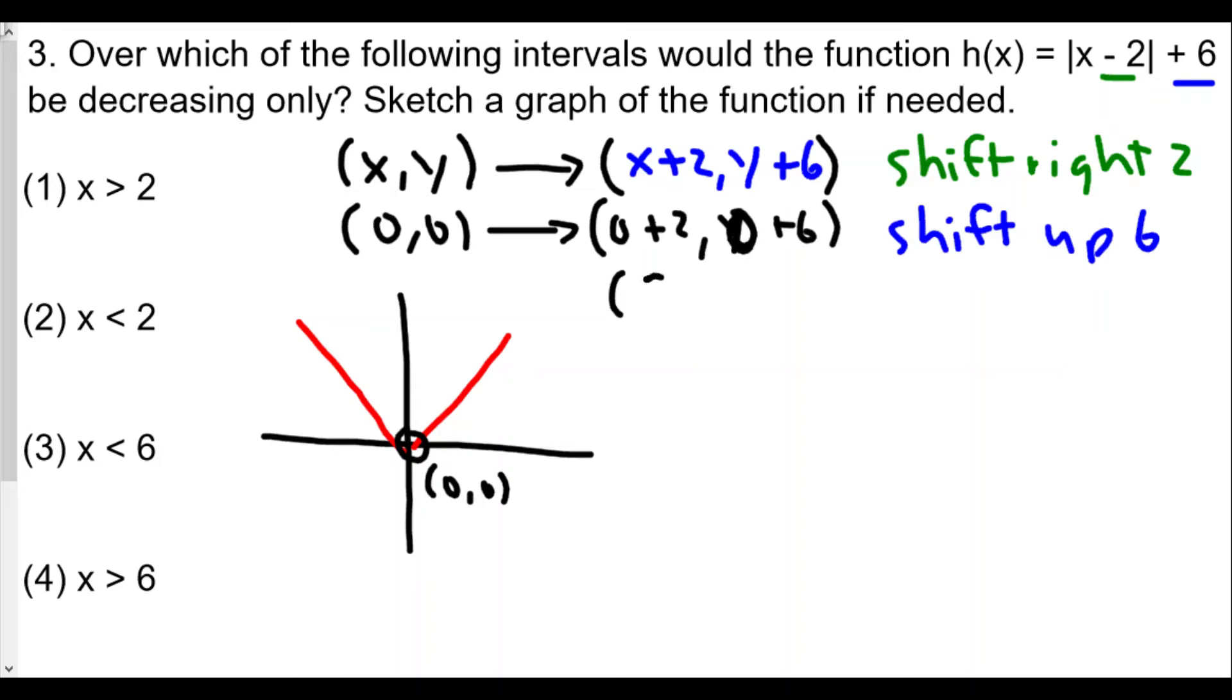Our new turning point would be here at (2, 6), and it would look kind of like this V shape.